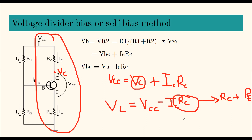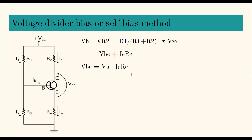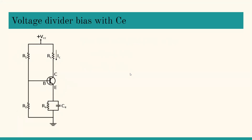An AC feedback is provided through RE, which reduces the voltage gain of this particular setup. Now, in the standard voltage divider bias circuit, there is only one supply, VCC. But what if there is a dual power supply — for example, plus VCC and minus VEE, such as +15V and -15V? In that case, we use voltage divider bias with emitter bias.